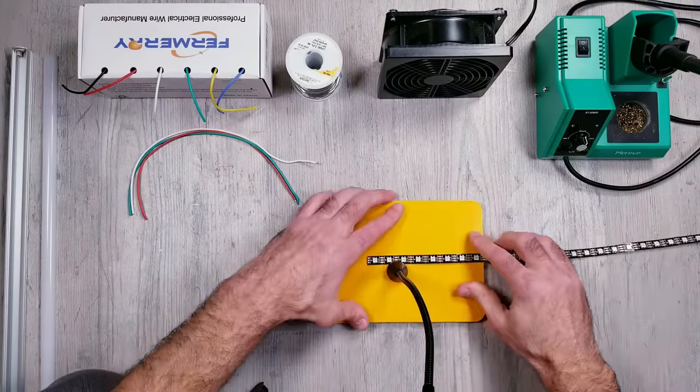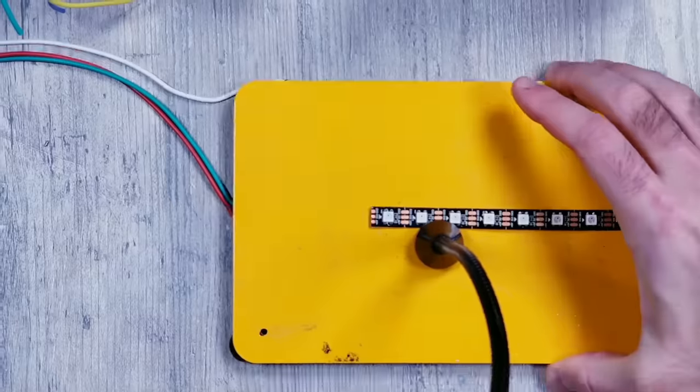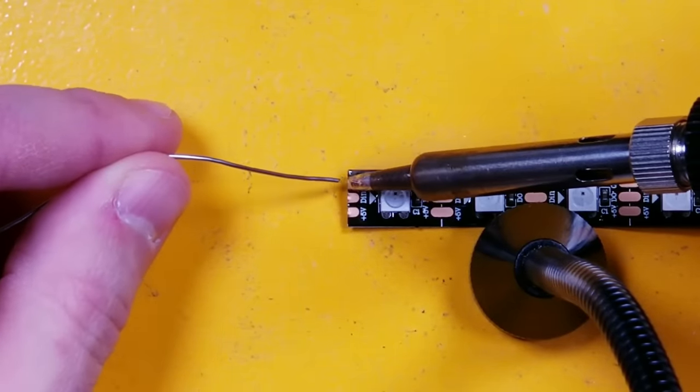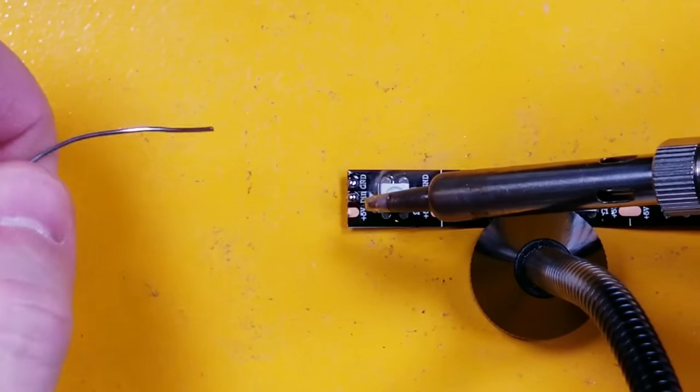So once you have your strip cut it's time to apply some solder to the pads of the LEDs. For this step put the tip of the hot iron directly onto the pad and then quickly feed a little bit of the solder into that same pad. You should then have a little blob that sticks.